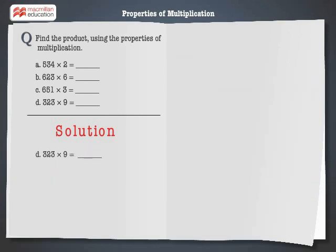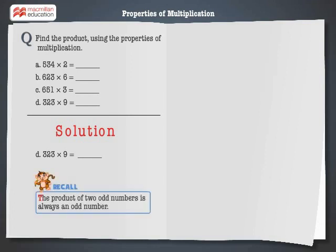323 multiplied by 9 is equal to dash. Let's recall that the product of 2 odd numbers is always an odd number. 323 multiplied by 9 is equal to 2,907.